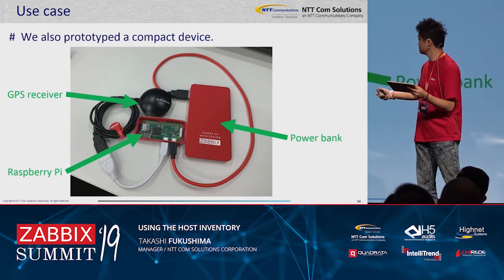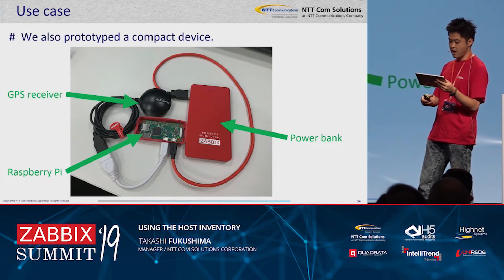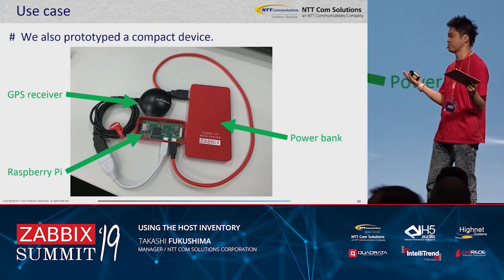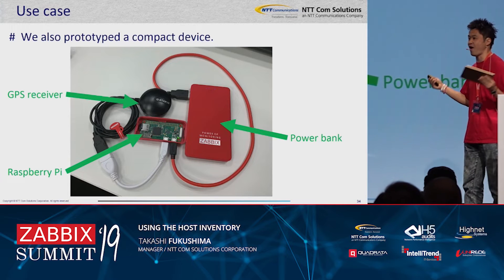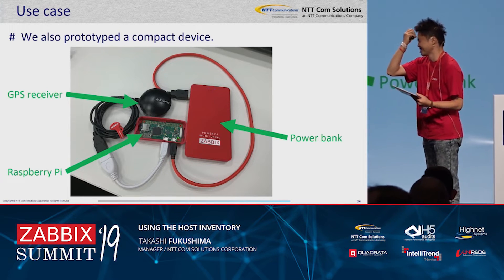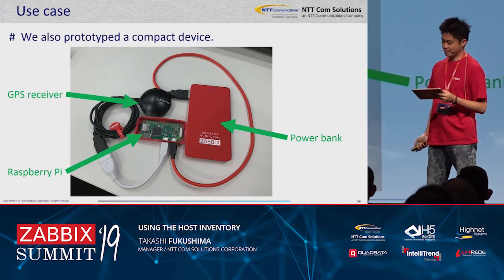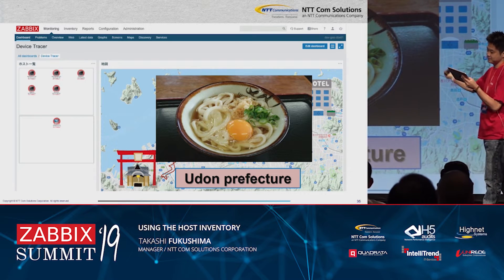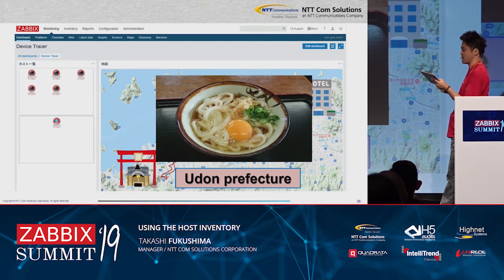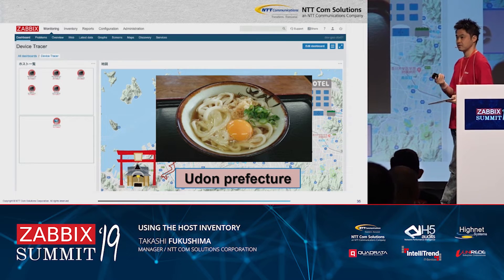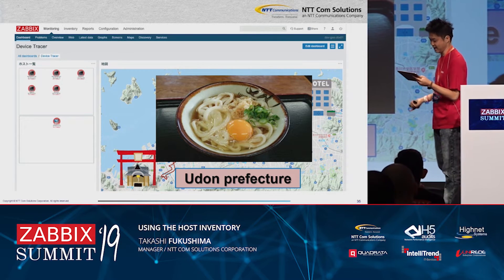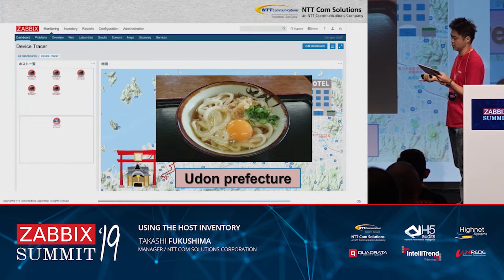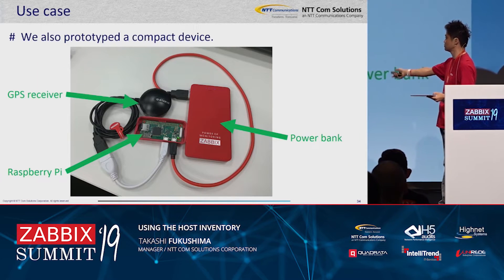If you want to get this power bank, you can buy it outside this conference venue — but it is sold out! The route history of Udon Prefecture that I showed you earlier was created on this compact device.